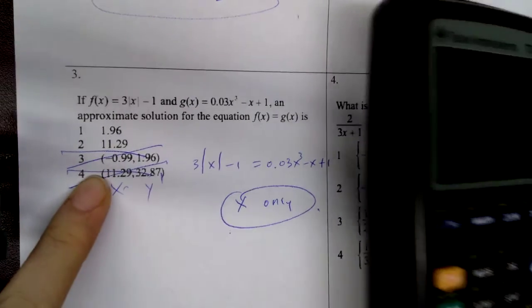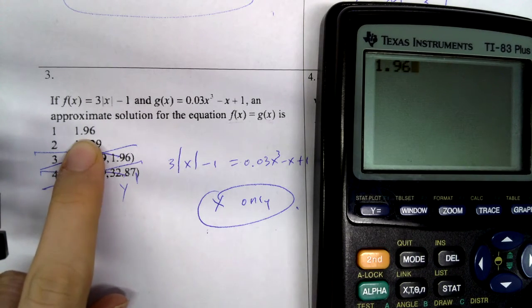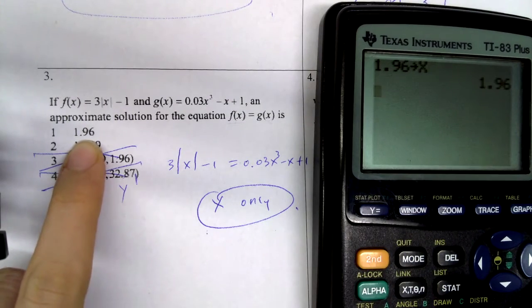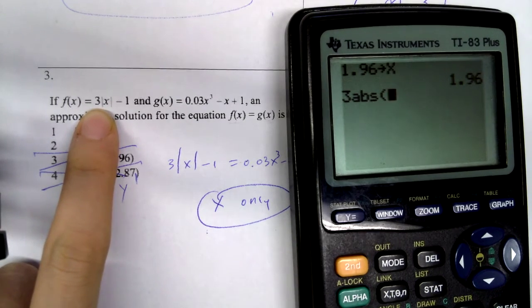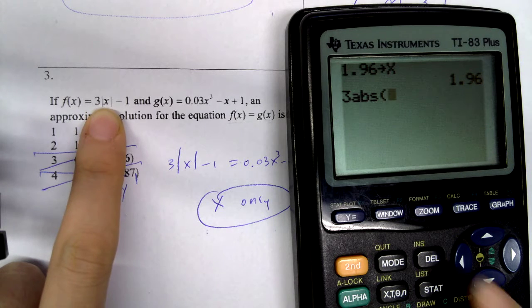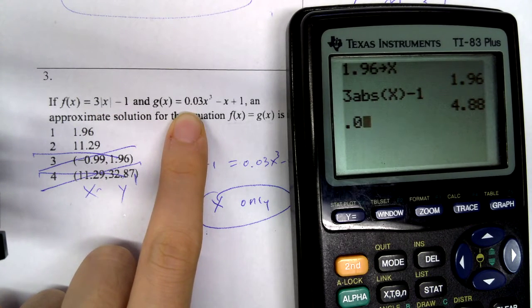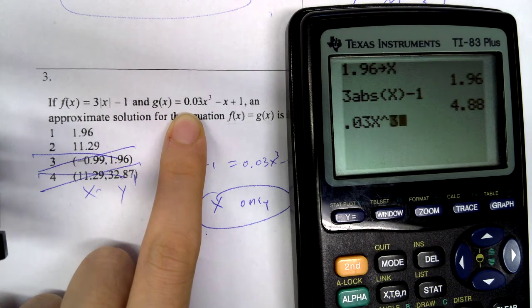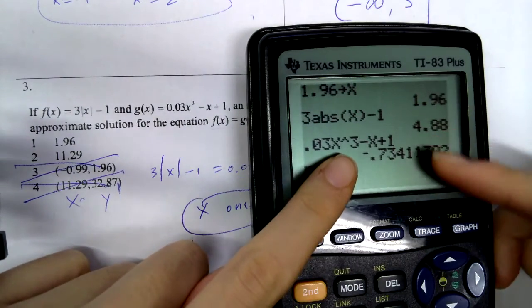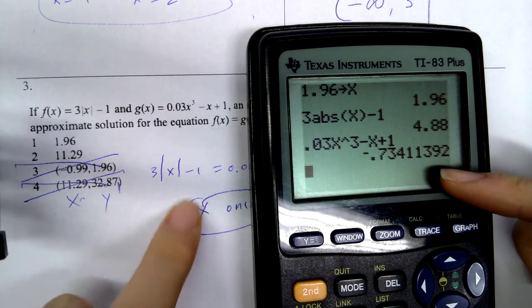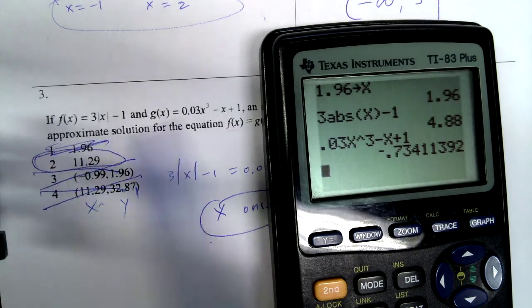Alright, so then now, let me go ahead and test out my answers. So again, I'm going to go ahead and do 1.96 store x and let me check out the left side. Absolute value is under num, math, num. It's the first option. Okay, so it tells me that they are not equal to each other at all. So that is not my solution. So then by the process of elimination, 2 is my answer.